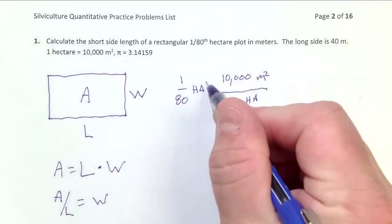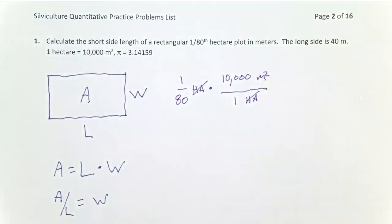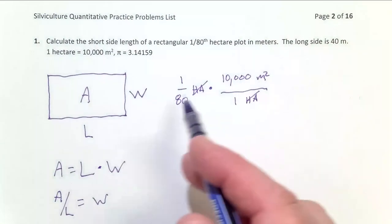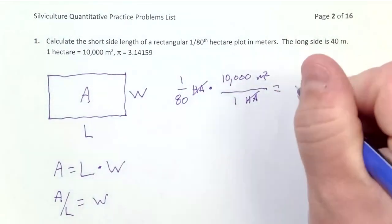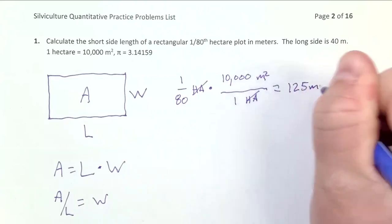And to be sure I'm doing this right, I can see if my units cancel out. And indeed they do. Hectares goes away. And so the units I'm going to be left with there are meters squared. And so this is simply 10,000 divided by 80, which if you punch that into your calculator, you'll see equals 125 meters squared.